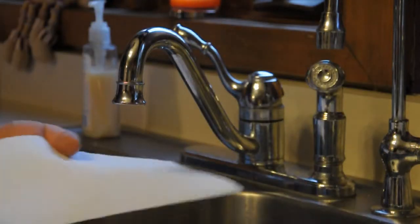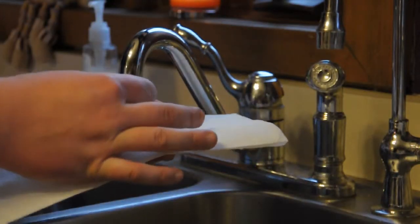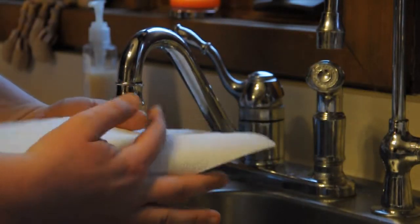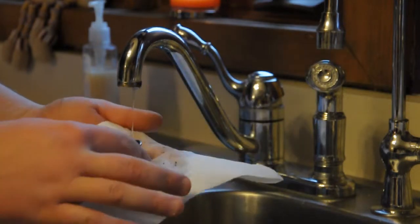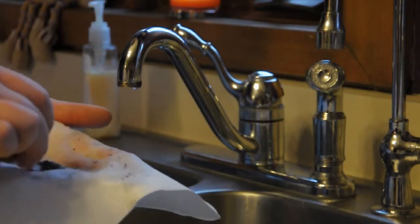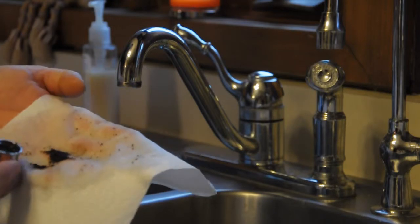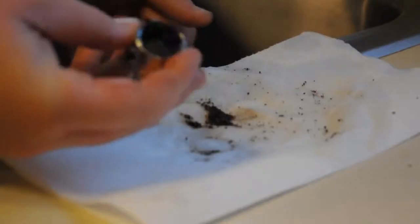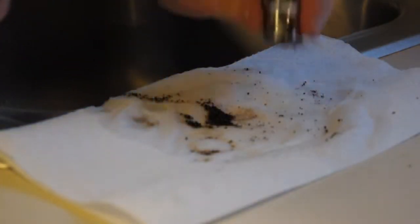Next, take your paper towel or napkin and place it under the aerator. This catches all the sediment which is in the faucet. Take your aerator and tap it out.